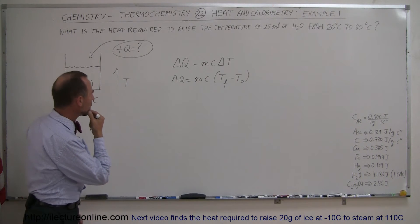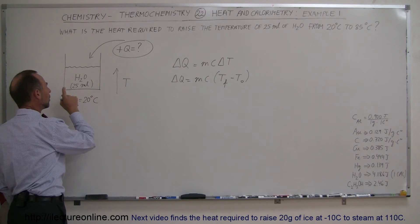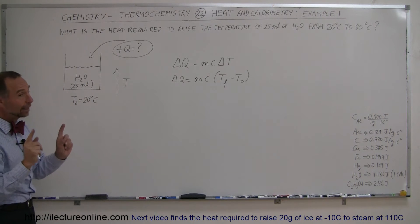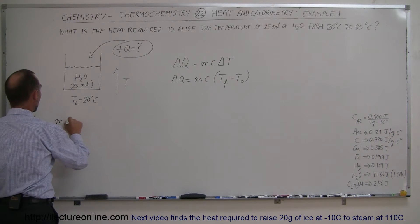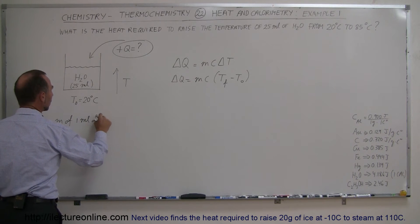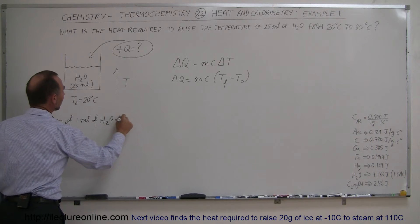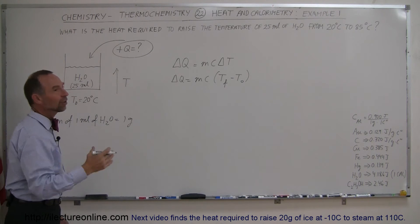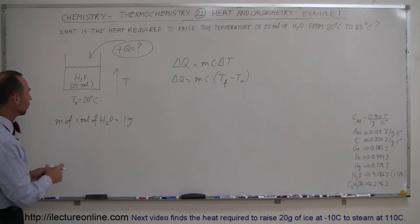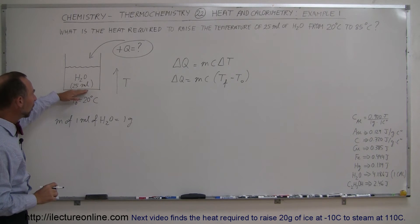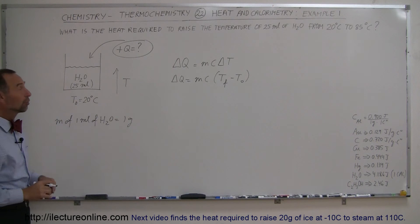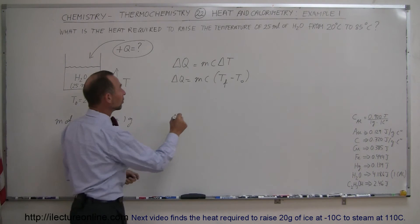What about the mass? Well, we weren't given the mass, but we're given the number of milliliters of water, and it turns out that we know that the mass of one milliliter of water happens to be equal to one gram, and that's by definition, by design. So that means if we have 25 milliliters of water, we will have 25 grams of water. So now we're ready to plug in the numbers.